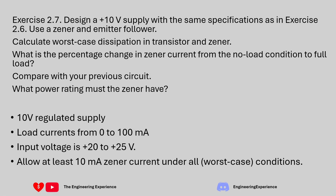Some of the requirements from the previous question: a 10 volt regulated power supply, load current from 0 milliamps to 100 milliamps, input voltage from 20 to 25 volts, and we need to allow at least 10 milliamps of current through the Zener under all conditions. We will be following these rules for the question.